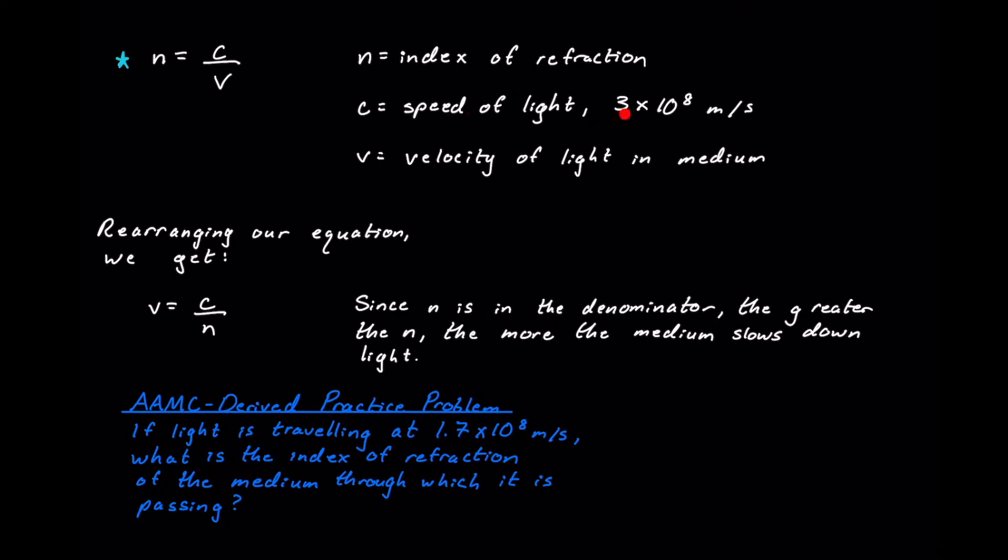c is going to be the speed of light in a vacuum, 3 times 10 to the eighth meters per second—this is also a value we do need to have memorized for the MCAT. And then third, V, velocity of our light in the medium, also measured in meters per second, but is going to always be less than our speed of light in a vacuum. Okay, we can't go faster than the speed of light, but we definitely can slow down from that speed of light in a vacuum.